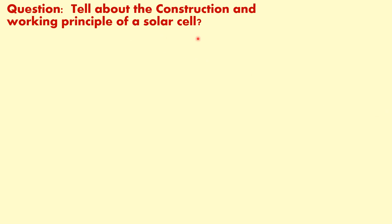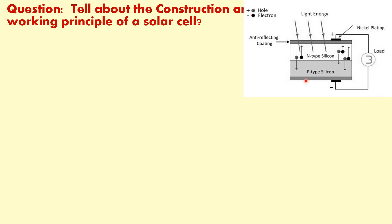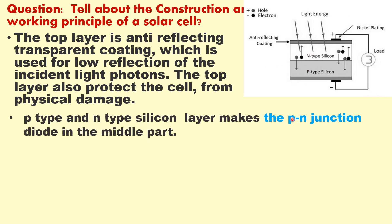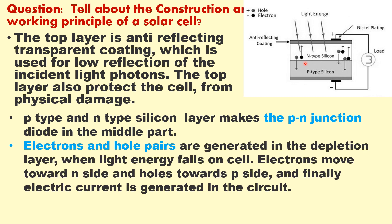Tell about the construction and working principle of a solar cell. The diagram shows the construction of a solar cell. The top layer is a transparent anti-reflection coating, which is used for low reflection of incident light photons so that the light can be absorbed fully. This transparent coating also protects the cell from physical damage. Below it we have P-type and N-type silicon layers which form the PN junction.